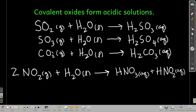So these are some examples of covalent oxides and how they form acidic solutions. They do that by forming acids. Sulfur dioxide, for example, reacts with water and makes sulfurous acid. Sulfur trioxide makes sulfuric, and so on. We get nitric and nitrous acid from nitrogen dioxide in water.